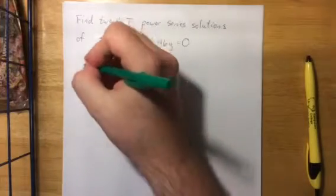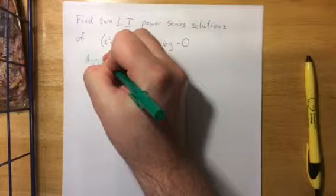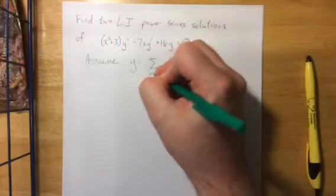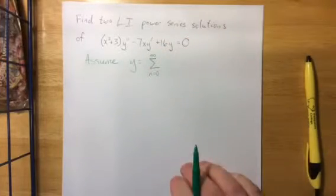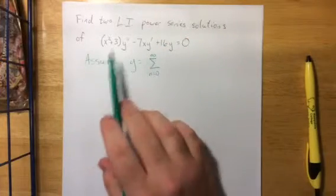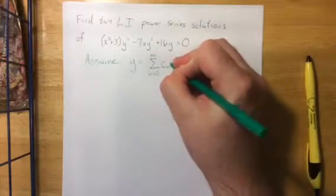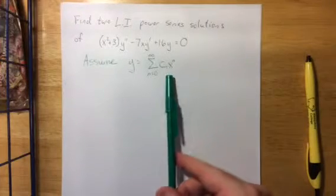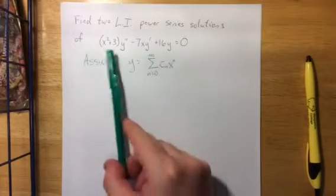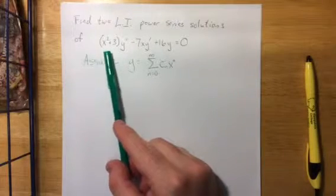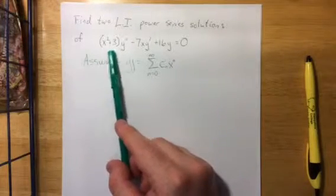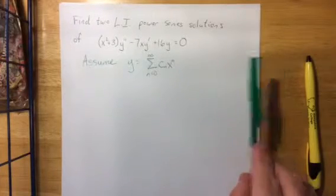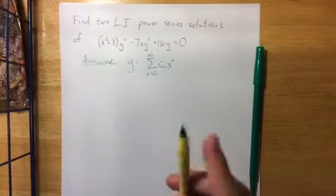Given that we've been asked for power series solutions, we can immediately start with the assumption that a solution is going to take the form of a power series. When dealing with an ordinary point, it's okay to center this about any ordinary point you decide. I've decided on x equals 0 because it tends to be pretty nice. The only two singular points are points that make x squared plus 3 equal to 0, which would be plus or minus i times the square root of 3.